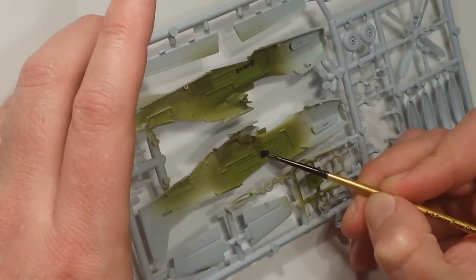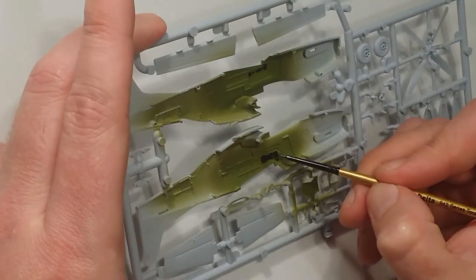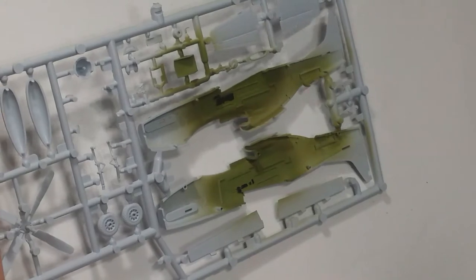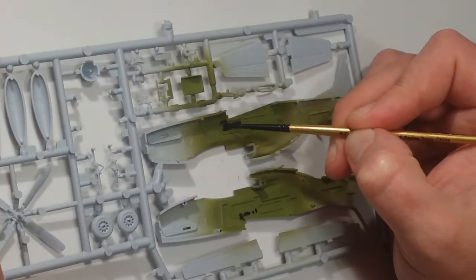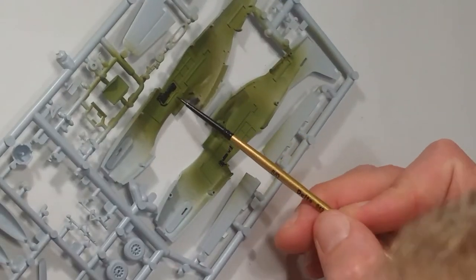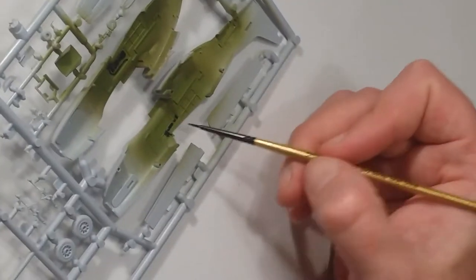I then spray the interior NATO green followed by a khaki. So that would be XF-67 followed by XF-49. So I just decided I like that look. Then picked everything out with a bit of NATO black which if I'm not mistaken is XF-69.